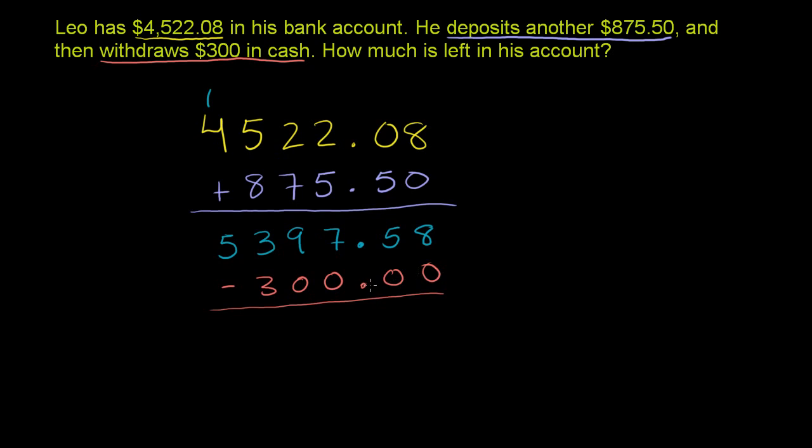And I just added some trailing zeros after the decimal. $300.00 is the same thing as $300.00 and 0 cents. And then we subtract.